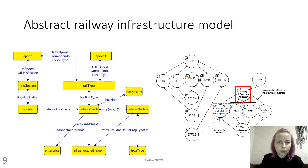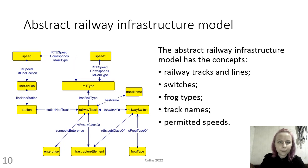The vocabulary is developed to describe railway infrastructure. The abstract railway infrastructure model ontology includes the concepts of railway tracks and lines, switches, frog types, track names, and permitted speeds.